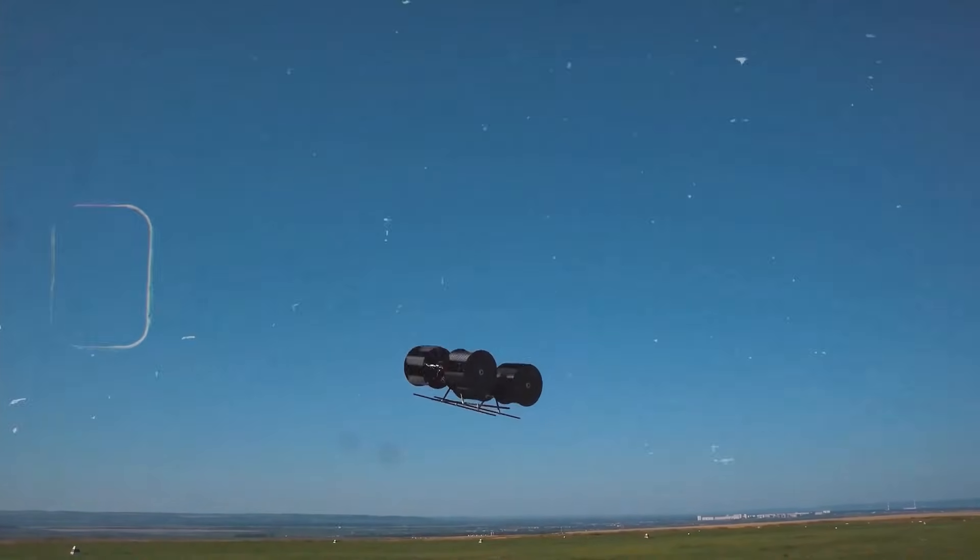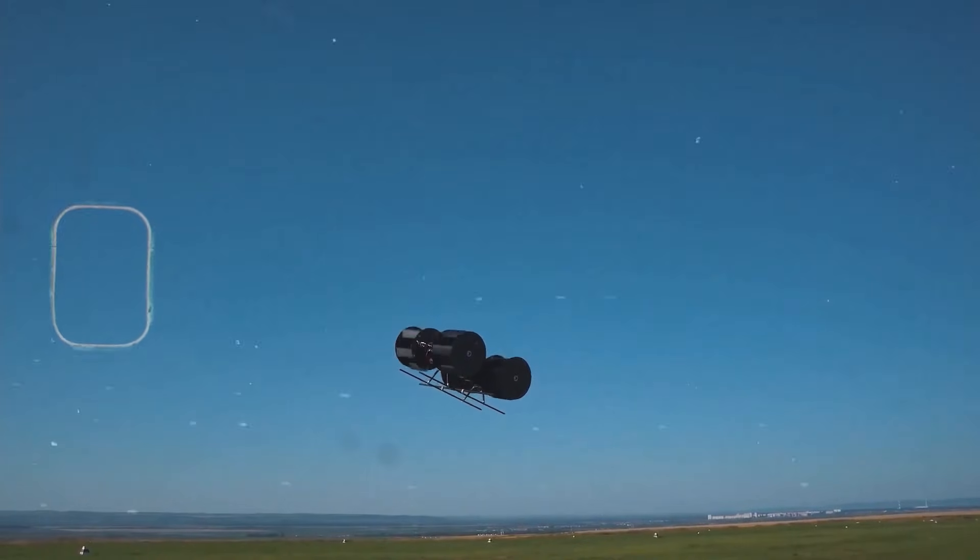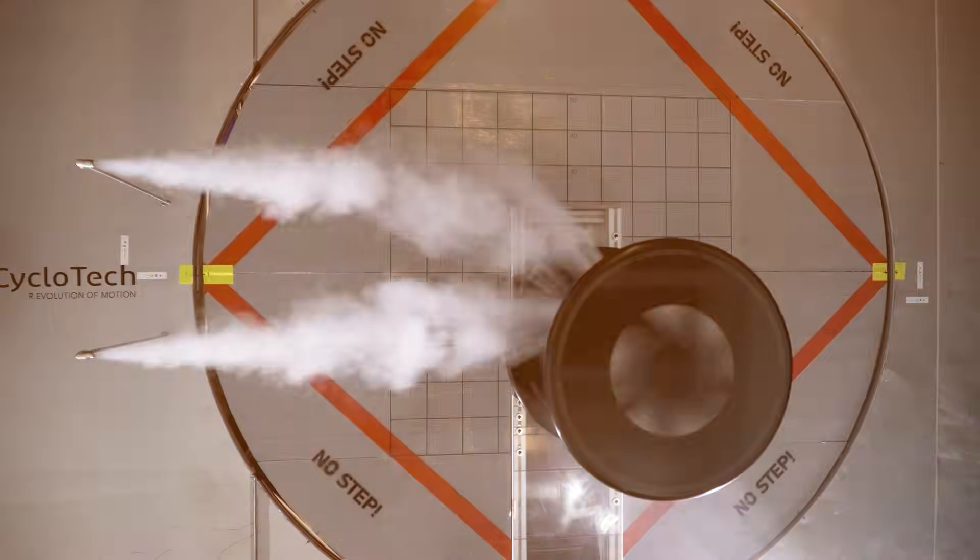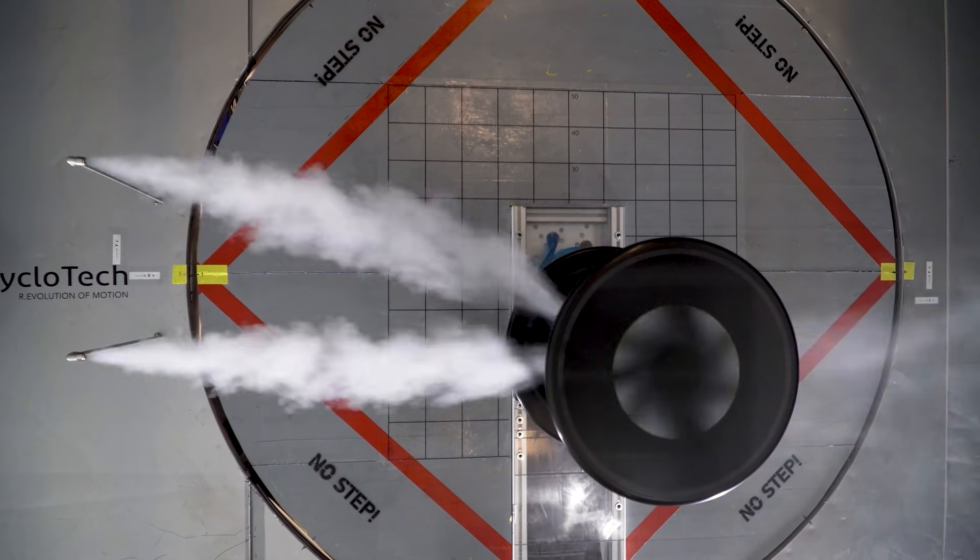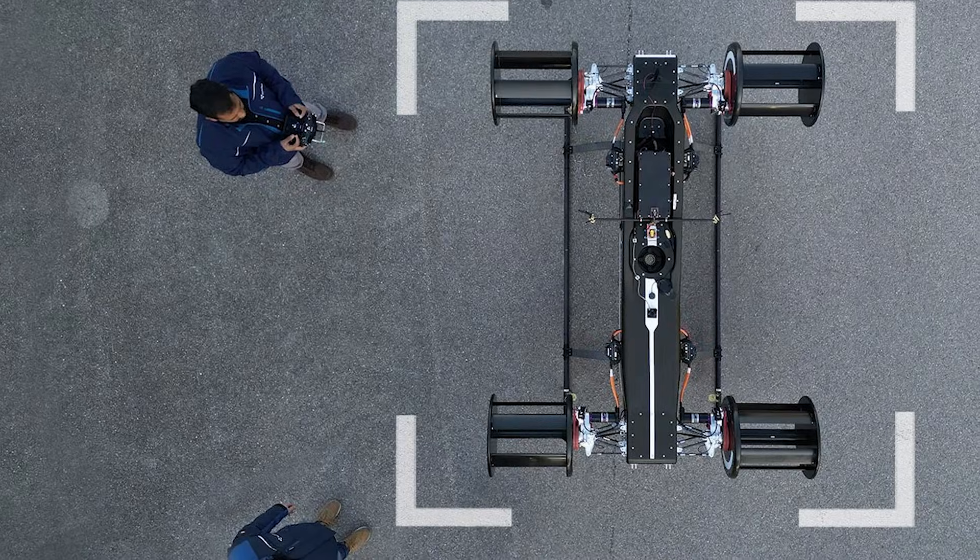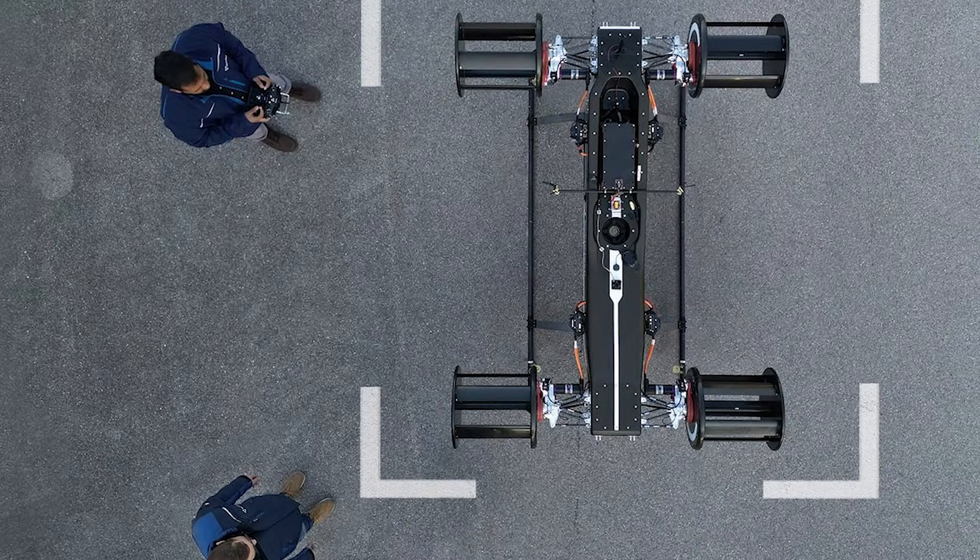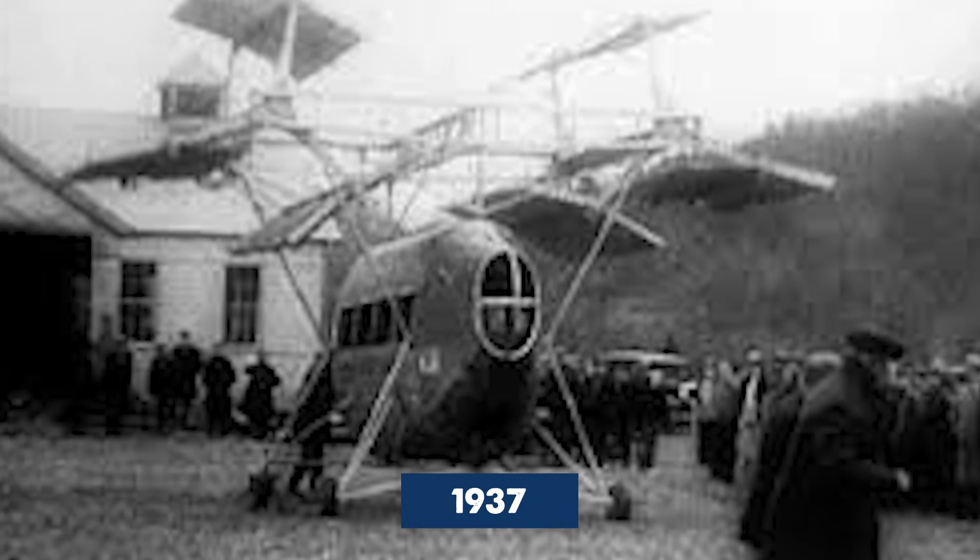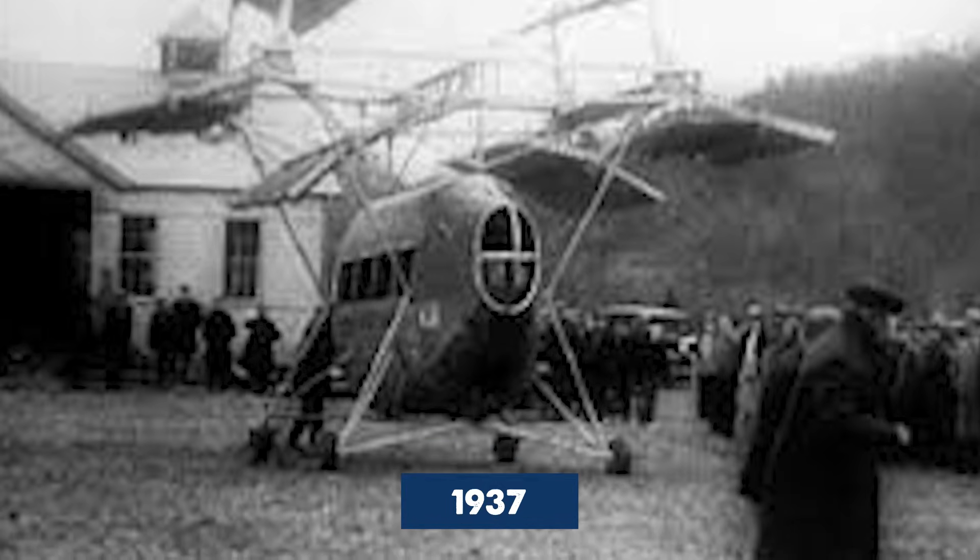The true breakthrough for cycloidal technology did not come from the sky, but from the sea. In 1931, Ernst Schneider patented what would become the Voith Schneider propeller. Unlike experimental aircraft, this system found immediate practical use. By 1937, it was successfully tested for marine propulsion, where precision and control mattered more than speed.